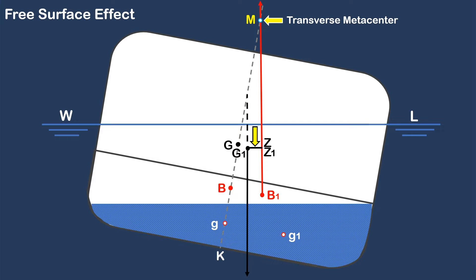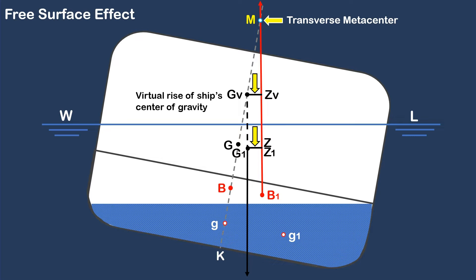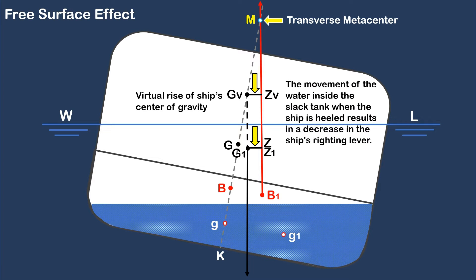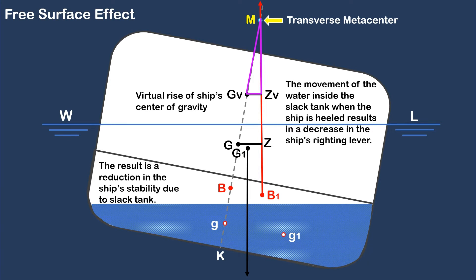If we extend the downward vertical force upward, intersecting the centerline, the point of intersection will be GV, or the virtual rise of the ship's center of gravity. The horizontal distance between GV to ZV is equal to G1 and Z1. The movement of the water inside the slack tank when the ship is heeled results in a decrease in the ship's righting lever. This is supposed to be the ship's stability triangle if the water inside the tank cannot move or the tank is pressed up, which is bigger compared to the stability triangle when the water is free to move inside the tank. The result is a reduction in the ship's stability due to the slack tank.